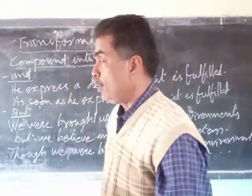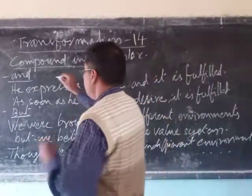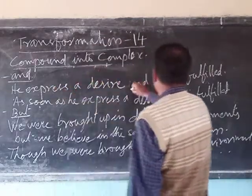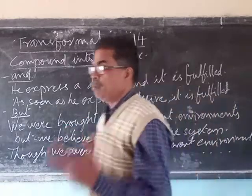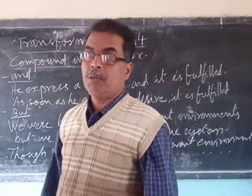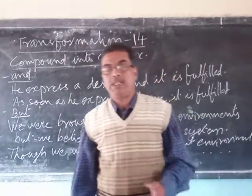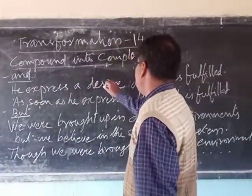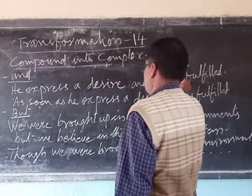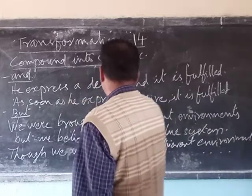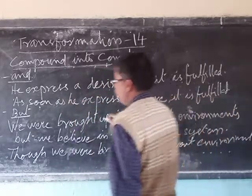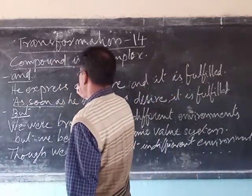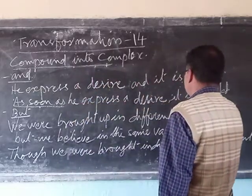Let's look at a few examples. Using a sentence that has 'and' as the coordinating conjunction: 'He expresses a desire and it is fulfilled.' Think about a powerful personality — financially or politically powerful. As soon as he expresses his desire, it is fulfilled. 'As soon as he expresses his desire' is the subordinate clause made from the first coordinate clause, and 'it is fulfilled' is retained.